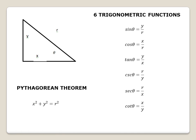Since the type of triangle we are using is a right triangle, let us also recall the Pythagorean theorem. It states that the sum of the squares of the legs of a right triangle is always equal to the square of its hypotenuse — that is, x² + y² = r².